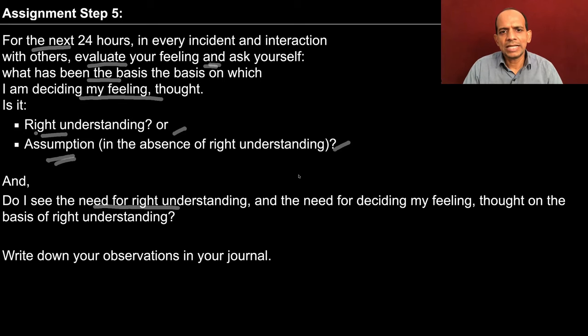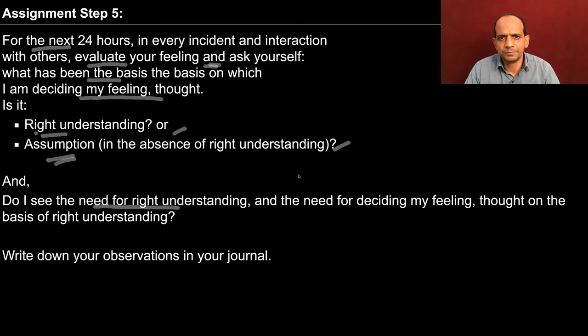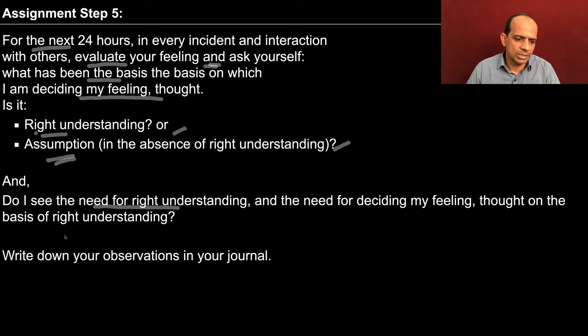If I am able to see that when the basis is right understanding, I am going to be happy and my conduct is going to be definite, then I naturally see the need for right understanding. Many times we feel that I am right and the other person needs to understand. But it might be the case that I am also wrong and the other is also wrong — so I also need to develop right understanding, and the other also needs to develop right understanding. This is one important takeaway: we are able to see the need for right understanding. You can note down your observations in your journal and we'll discuss the next step in the next week. Today we discussed step 5 — we tried to observe the basis for the decision we are making about our feeling, and make out whether this is right understanding or some assumption. So work on this, practice for a week, and then we'll discuss the next step. Thank you.